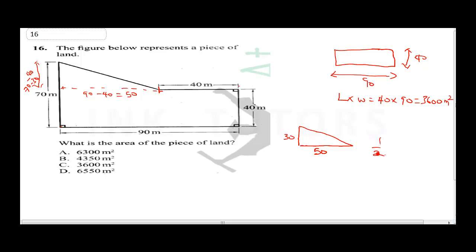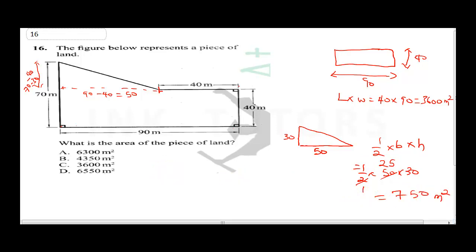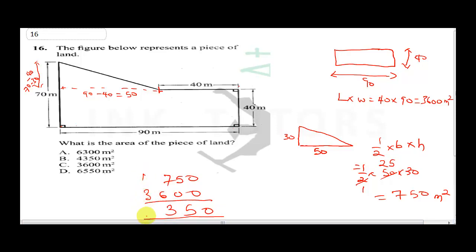For our triangle, we do half times base times height, which is half times 50 times 30. 2 into 50 gives us 25, and 25 times 30 is 750. So the triangle area is 750 metre square. When we sum up the two areas: 750 plus 3600 gives us 4,350 metre square. Our final answer here is B.